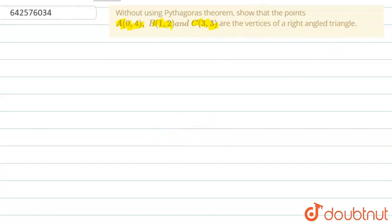Now, we have to find out whether triangle ABC is a right-angled triangle or not without using the Pythagoras theorem.